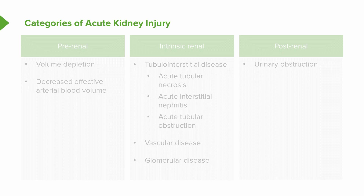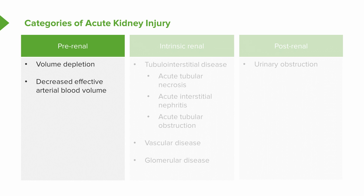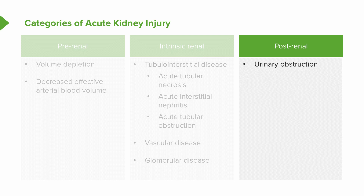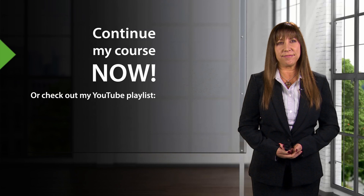Now let's think about the etiologies of different types of acute kidney injury. From the first year of medical school, most people can recall the three main categories: pre-renal, which includes volume depletion and decreased effective arterial blood volume; intrinsic renal disease, separated by compartments — the tubules and interstitium (acute tubular necrosis, acute interstitial nephritis, acute tubular obstruction), the vascular compartment, and glomerular disease; and finally the post-renal category, meaning urinary obstruction anywhere from the renal pelvis to the urethra.